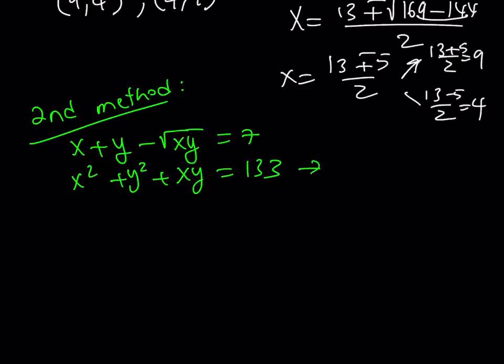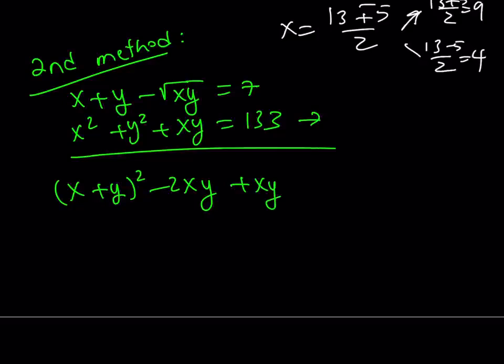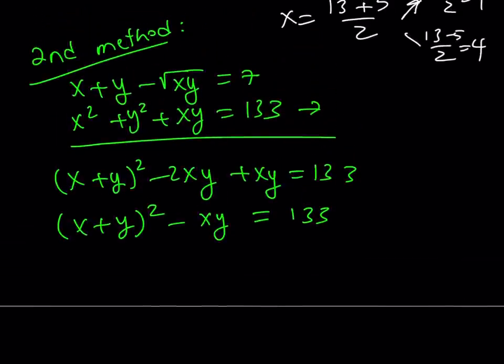Now, here's how the second method proceeds. If you look at the second equation carefully, I can kind of write it, and we actually did it like that before, but we didn't really proceed. So we can write it as x plus y quantity squared minus 2xy plus xy is equal to 133. And here, if you simplify, you get the following. So what's so special about it? Well, here's the thing.